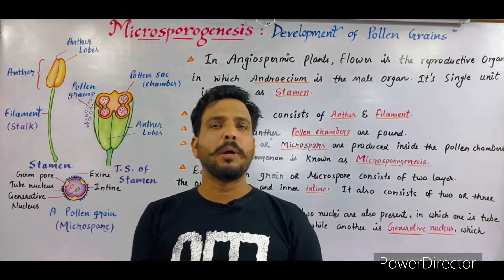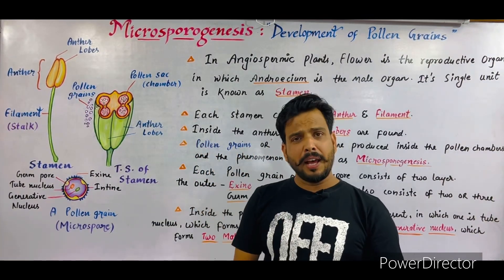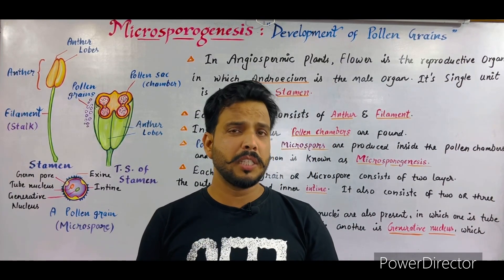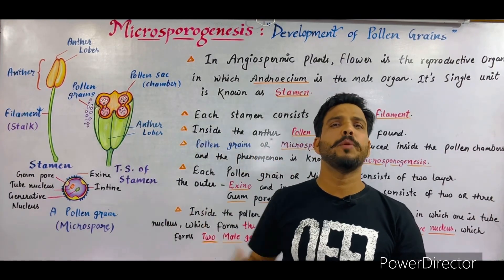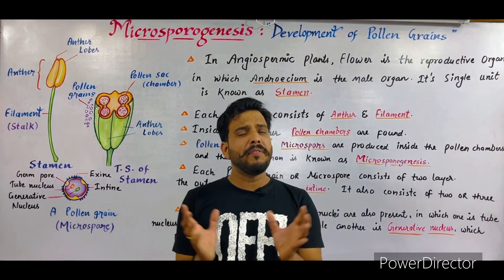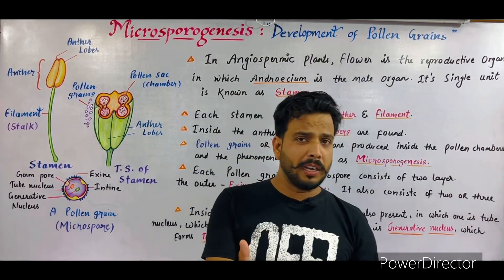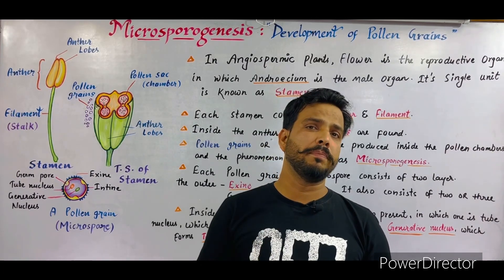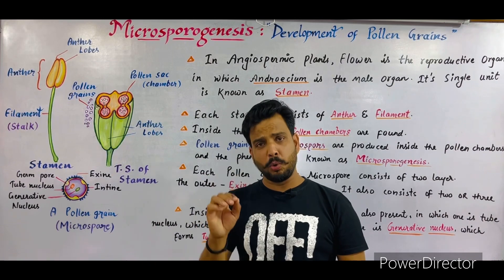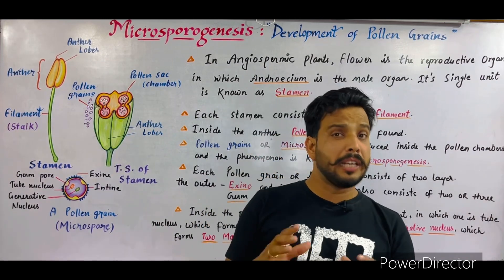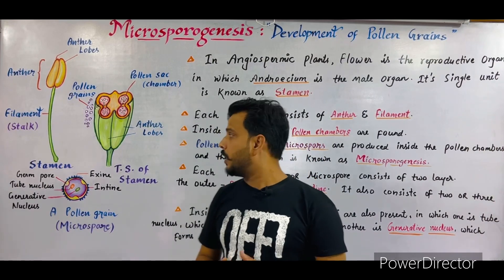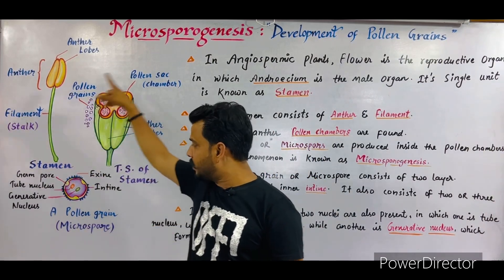Before knowing microsporogenesis, it is very important to know about the flower. The flower is the reproductive organ of an angiospermic plant. In angiospermic plants, male and female organs are situated on the flower. The male organ is termed androecium while the female is known as gynoecium.